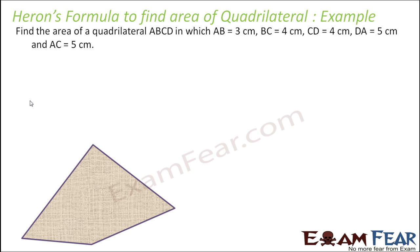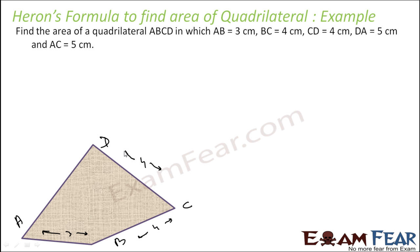In the next problem, we have to find the area of a quadrilateral ABCD where AB is 3 cm, BC is 4 cm, CD is 4 cm, DA is 5 cm, and diagonal AC is also 5 cm.